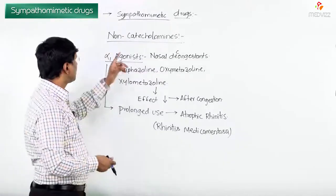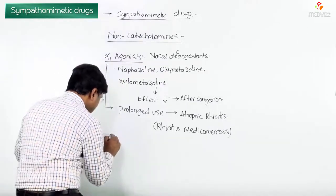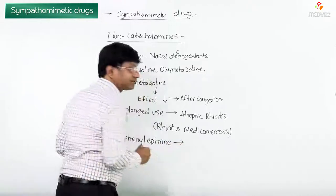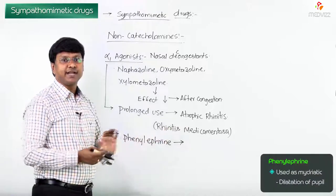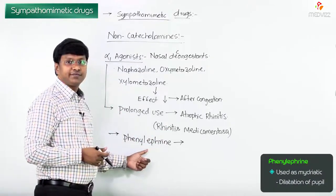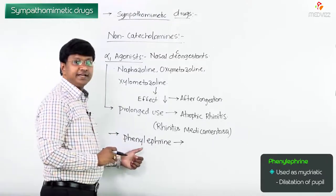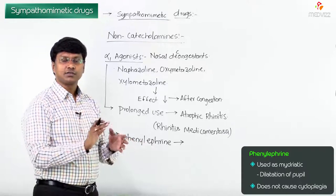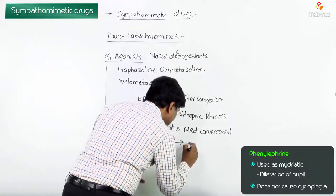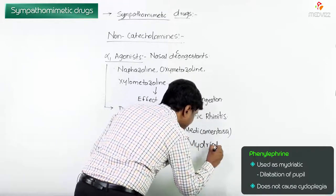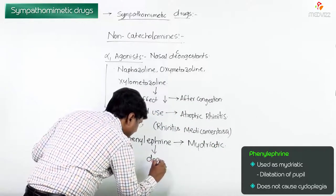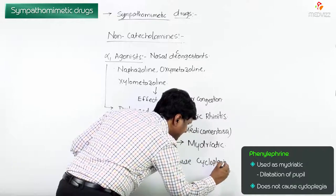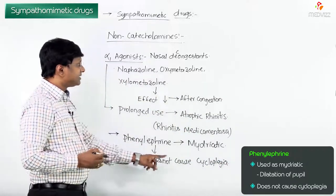Another important non-catecholamine is phenylephrine. Phenylephrine can be used as a mydriatic for dilation of the pupil. An important point to remember is that phenylephrine can be used as a mydriatic but it will not cause cycloplegia — meaning it will not cause loss of accommodation.